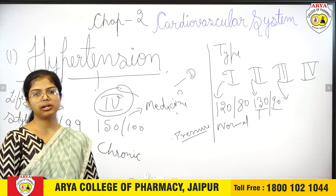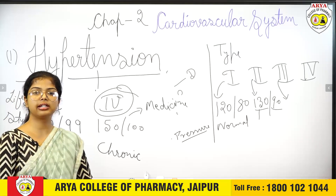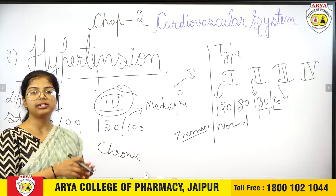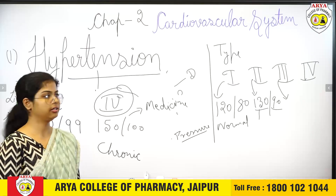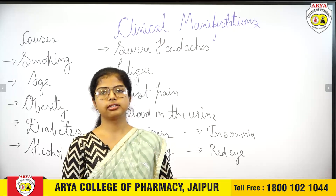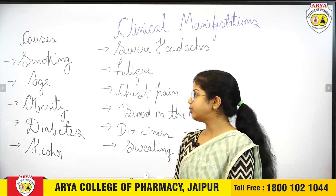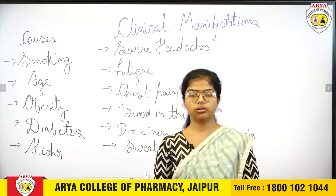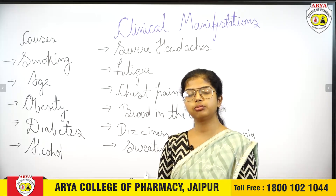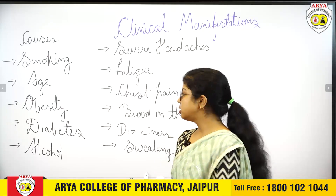Hypertension is a broad topic, but in our syllabus we will study its definition, etiopathogenesis, clinical manifestations, and pharmacological and non-pharmacological management. Now, causes of hypertension — the reasons hypertension occurs. First is smoking. Second is age factor: after the age of 40 to 50, high blood pressure and hypertension problems start to occur. Third is obesity — excess weight.